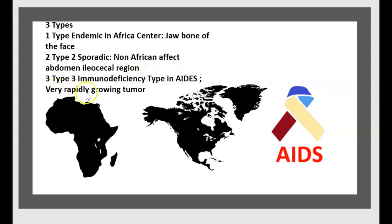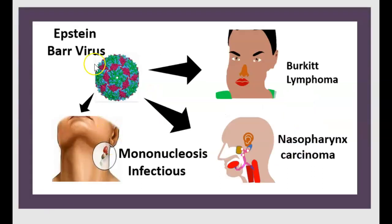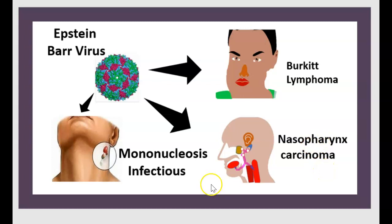It is a very rapidly growing tumor. Epstein-Barr virus is linked to Burkitt lymphoma, to nasopharyngeal carcinoma, and to infectious mononucleosis.